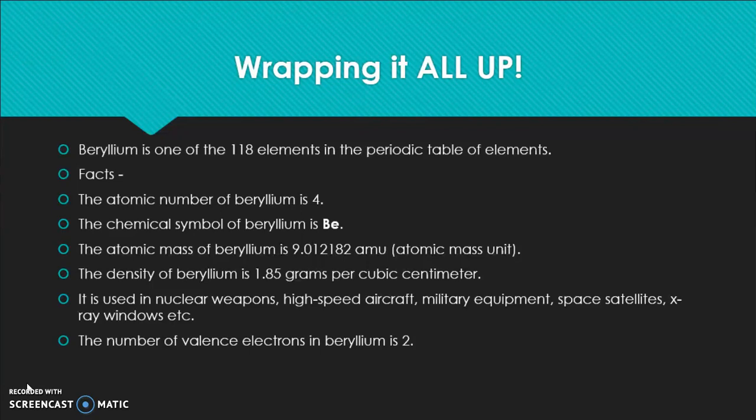Wrapping it all up. Beryllium is one of the 118 elements of the periodic table. The atomic number of beryllium is 4, and the chemical symbol is Be. The atomic mass is 9.012182 AMU. The density is 1.85 g per cubic centimeter. It is used in nuclear weapons, high-speed aircraft, military equipment, space satellites, x-ray windows, etc.